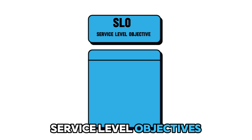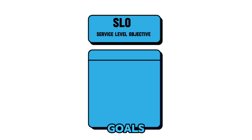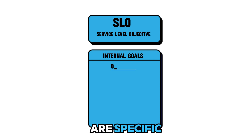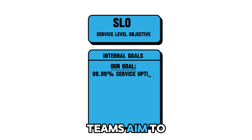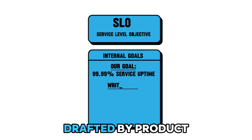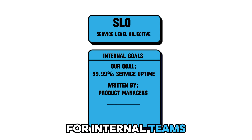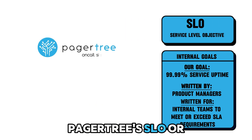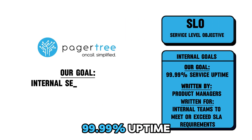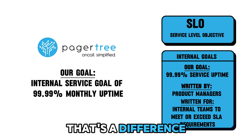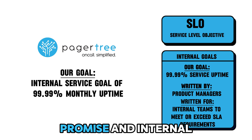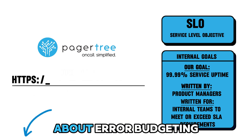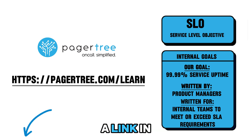Service level objectives, or SLOs, on the other hand, are the internal goals set to achieve or exceed the promise or guarantee made in the SLA. These are specific, measurable deliverables that internal teams aim to meet. They are typically drafted by product managers and are crucial for internal teams to ensure they meet or exceed the performance outlined in the SLA. PagerTree's SLO, or internal goal, is 99.99% uptime — that's a difference of almost 8 hours yearly between their customer promise and internal goal. This is also known as error budgeting. If you'd like to know more about error budgeting and other common metrics, there will be a link in the description below.